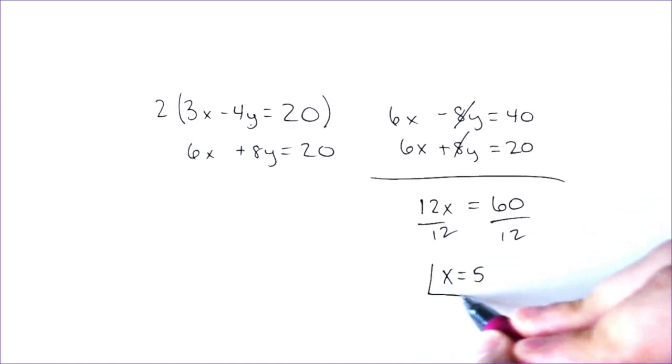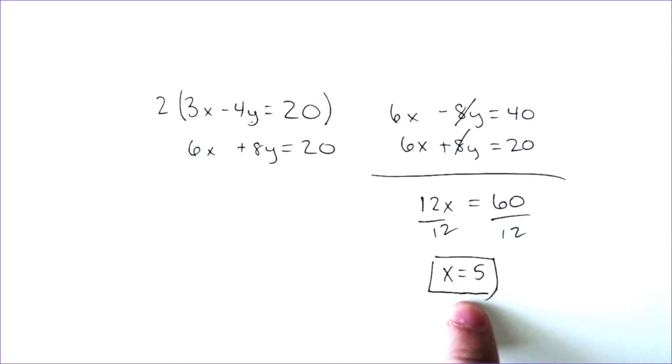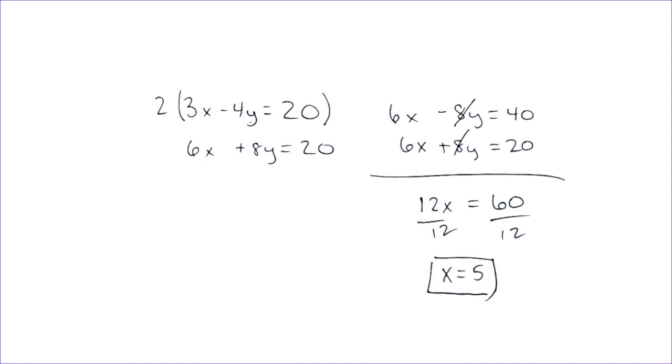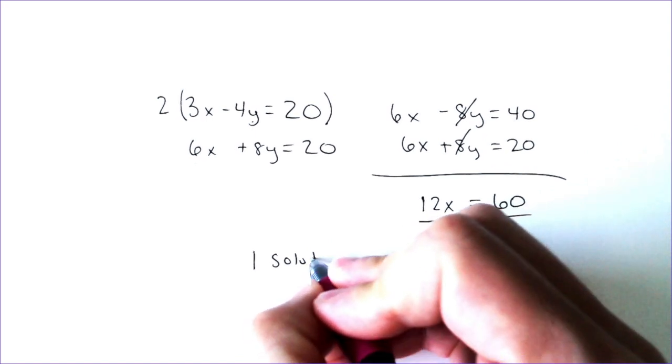Now, you may notice that that is one number. If that is one number, you found one solution. We didn't find the full coordinate solution, but we did find out that it does reach a single solution. Not no solution, not infinitely many solutions. So this is going to have one solution set to it.